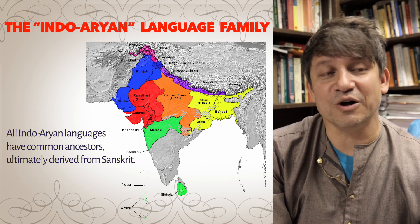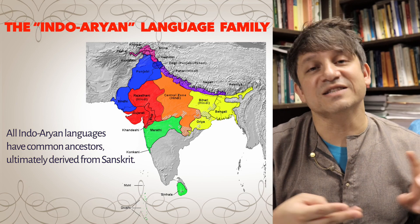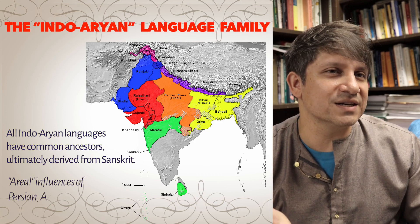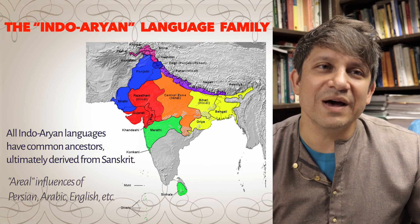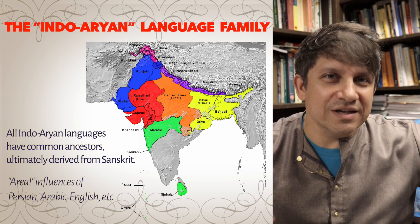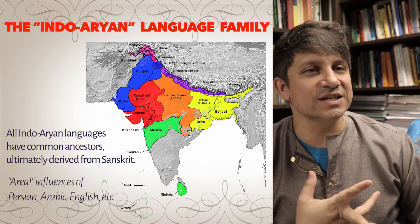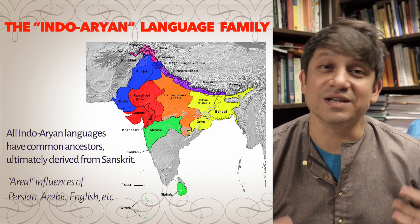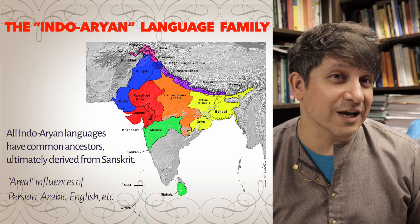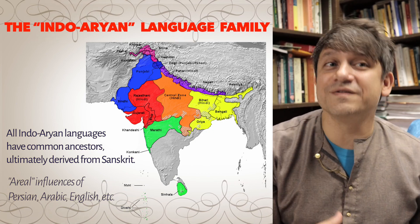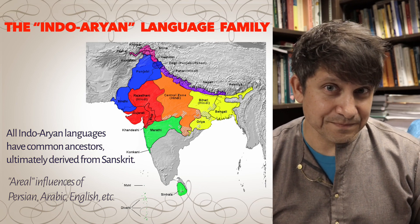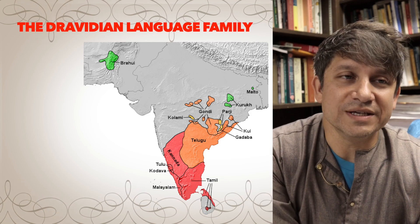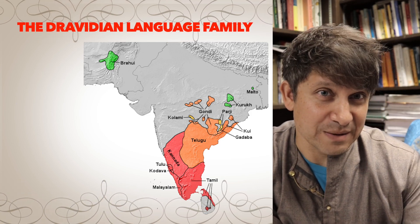All Indo-Aryan languages came from the classical language Sanskrit, just as the Romance languages of Europe — French, Italian, Spanish — all descended from Latin. One twist in South Asia is that the Indo-Aryan languages also have what are called areal influences from Persian, Arabic, and English that have altered their vocabulary sets. That's why a language like Urdu almost feels Persian in its vocabulary, but the core grammar still comes from Sanskrit.